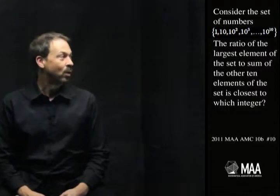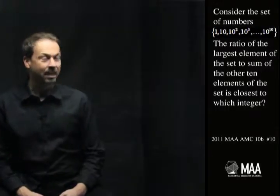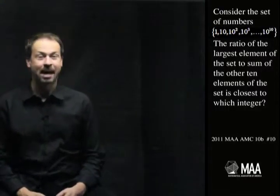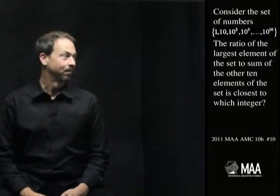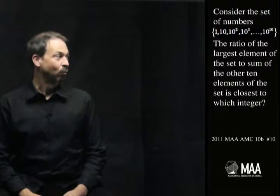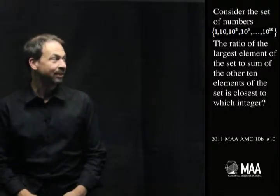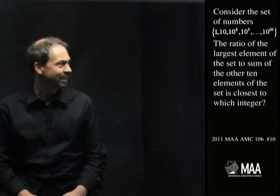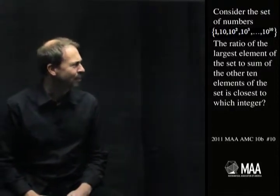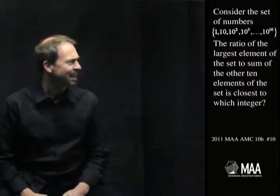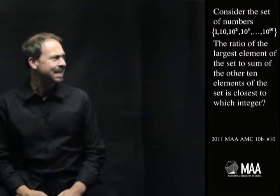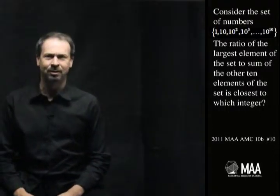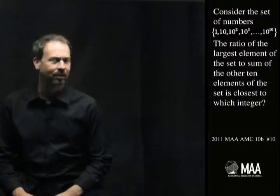Consider the set of numbers 1, 10, 10 squared, 10 cubed, all the way up to 10 to the 10th. The ratio of the largest element of the set to the sum of the other 10 elements of the set is closest to which integer?